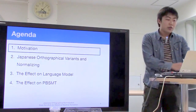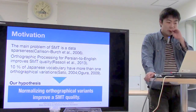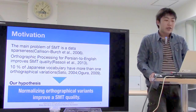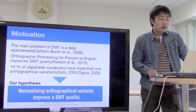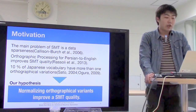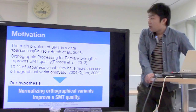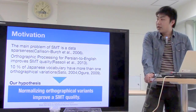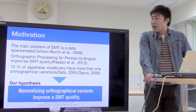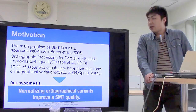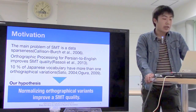First, motivation. In the field of SMT, the main problem is the data sparseness problem. Carlson Birch investigated sparsity, and his research shows that half of trigrams in test data do not exist in training data.